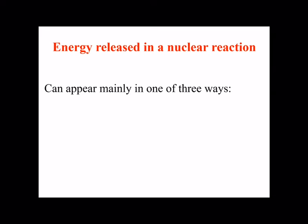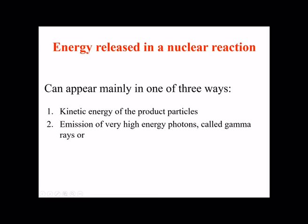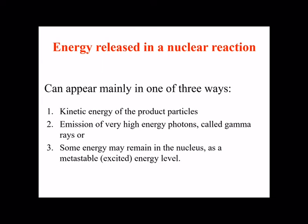Energy release in nuclear reactions can appear mainly in one of three ways. First, the energy can be released as kinetic energy of the product particles. Second, the energy can be in the form of emission of very high energy photons — gamma rays. Third, some energy may remain in the nucleus as a metastable or excited energy level. At least one of these is possible whenever a nuclear reaction occurs.